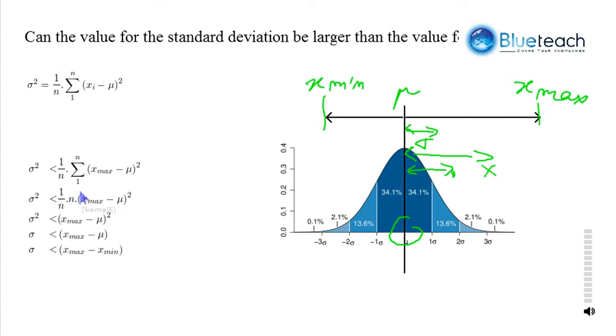So, we can take out the n, and we get sigma squared is lower than x max minus mu squared. So, sigma is lower than x max minus mu, because that's a positive number. So, x max is bigger, higher than mu.